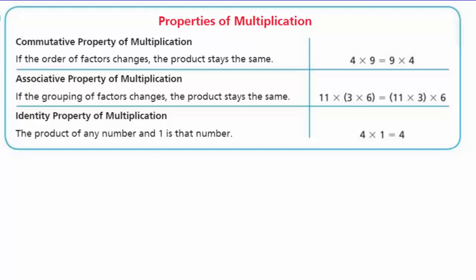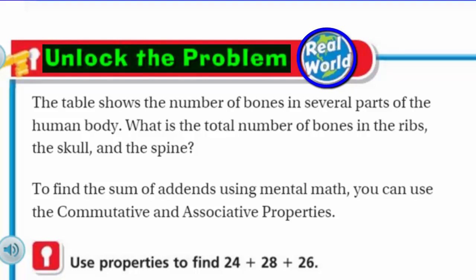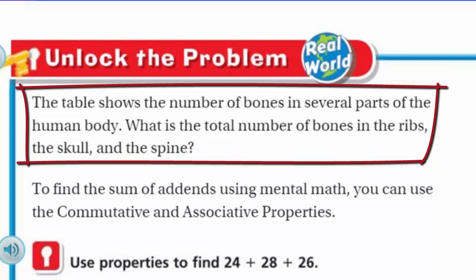And then I say hey, I stay the same. 4 times 1 equals 4. 3,480,000 times 1, right, is equal to 3,480,000. It doesn't change anything. So those are the properties. And that's what our focus is on our learning target today. But of course we can't do any of this unless we unlock the problem. That's right my friends, because you know what? It's real world, baby. Real world.